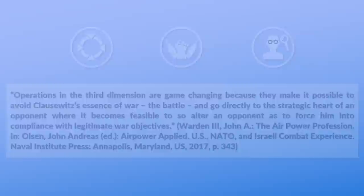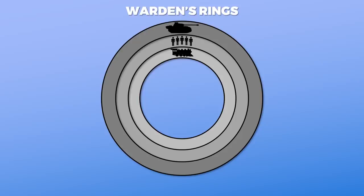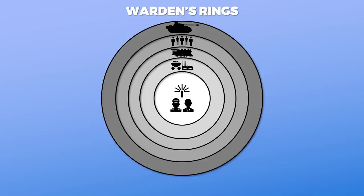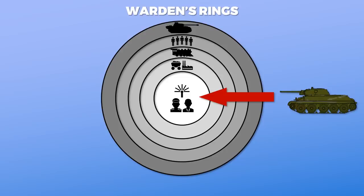This is probably best expressed by Warden's rings. The outer rings are the field forces; the next ring is the population; followed by the infrastructure and then the system essentials — facilities and processes that the state requires to survive, like mines and factories. Finally, the innermost ring is the leadership — the decision-makers, command and control facilities and similar elements. With land or naval forces, one basically has to fight through the outer rings to the inner ring, like the Red Army did in the Second World War.